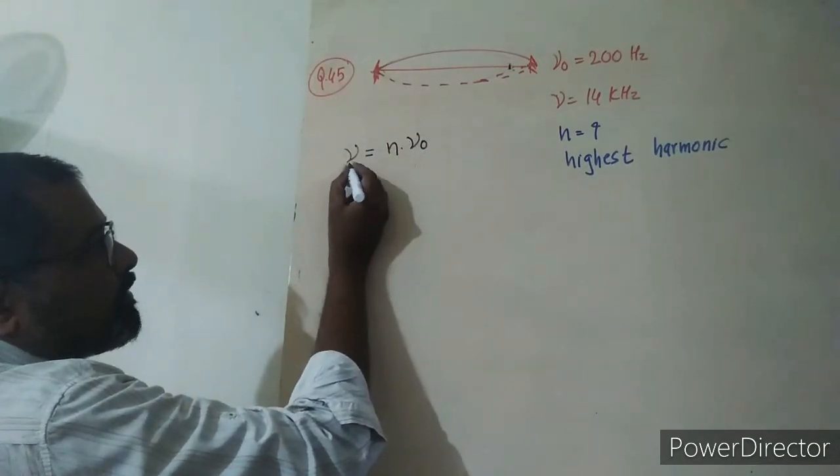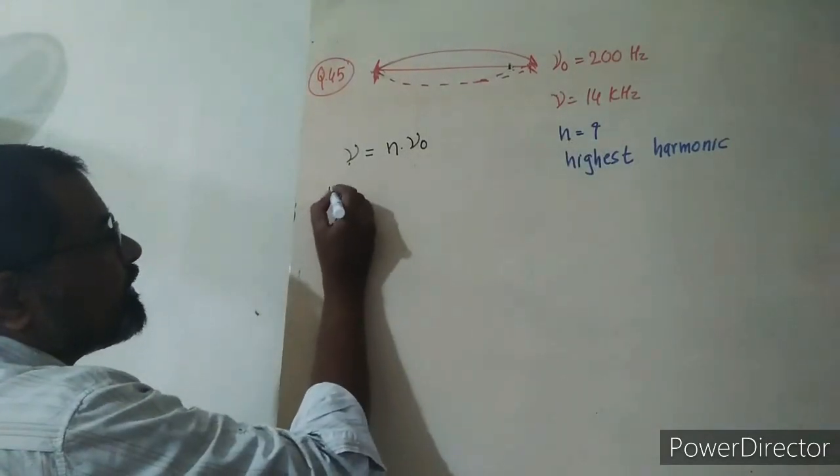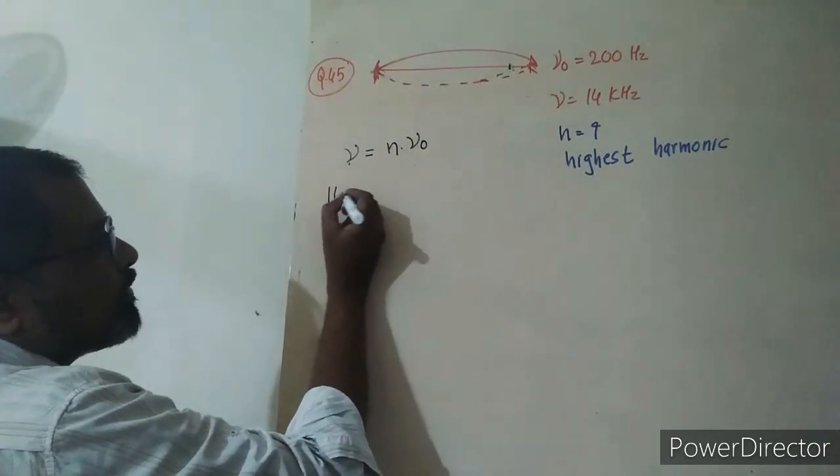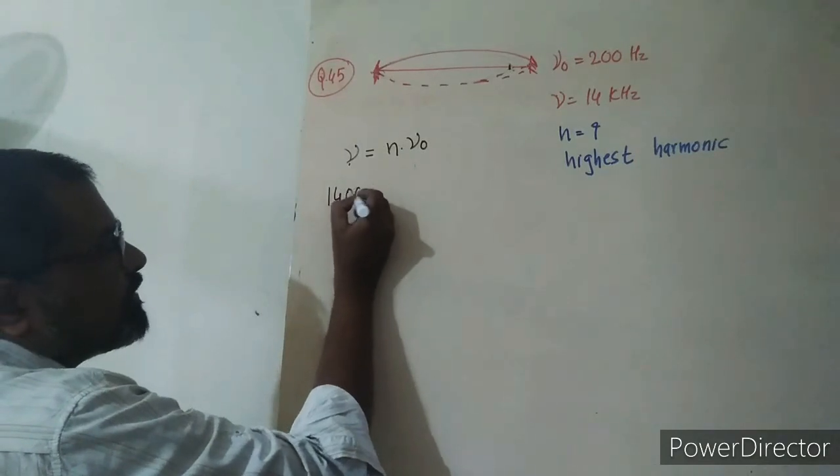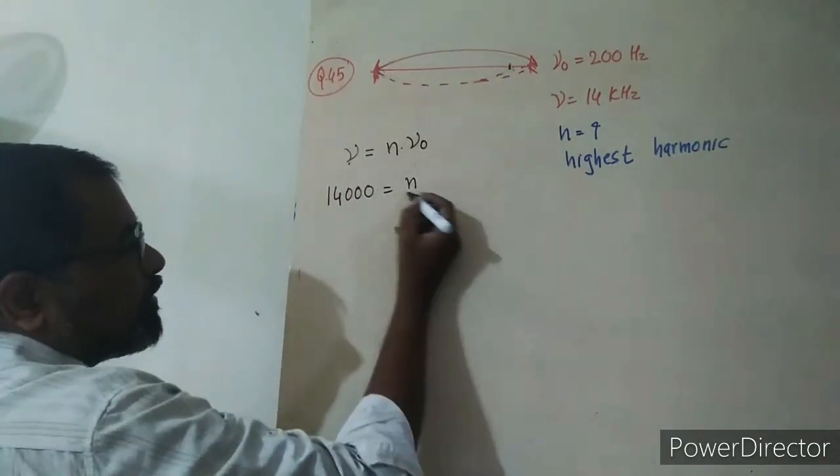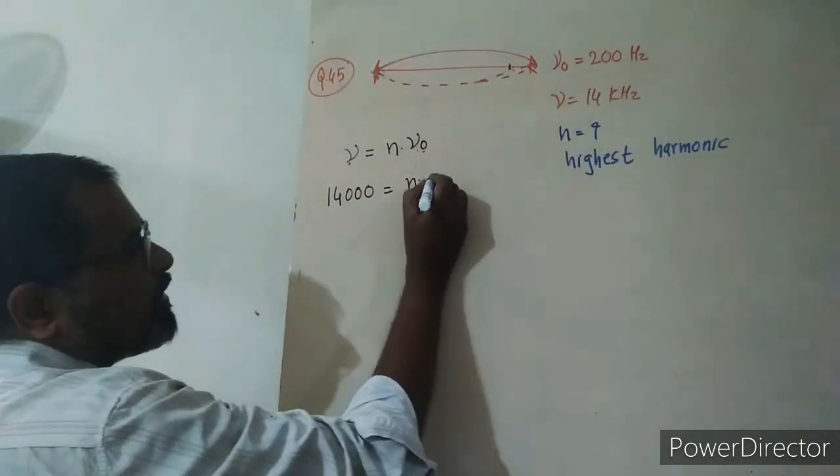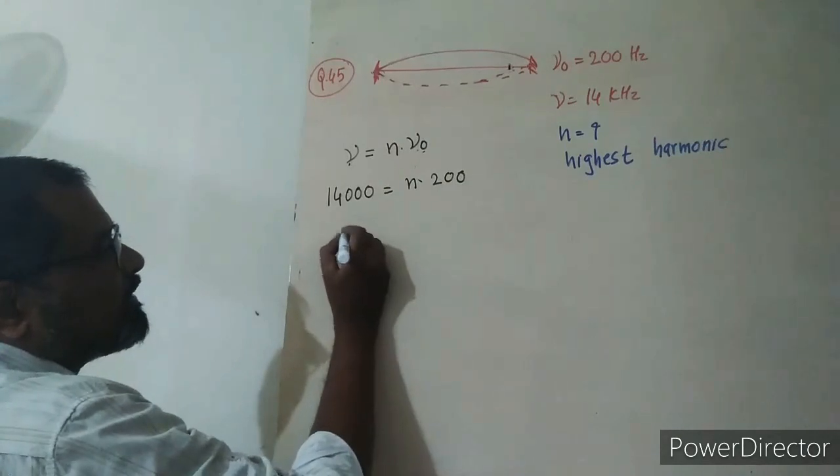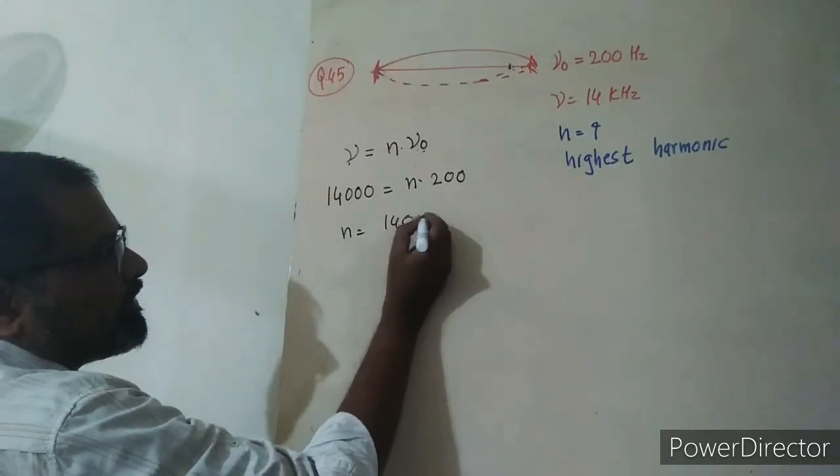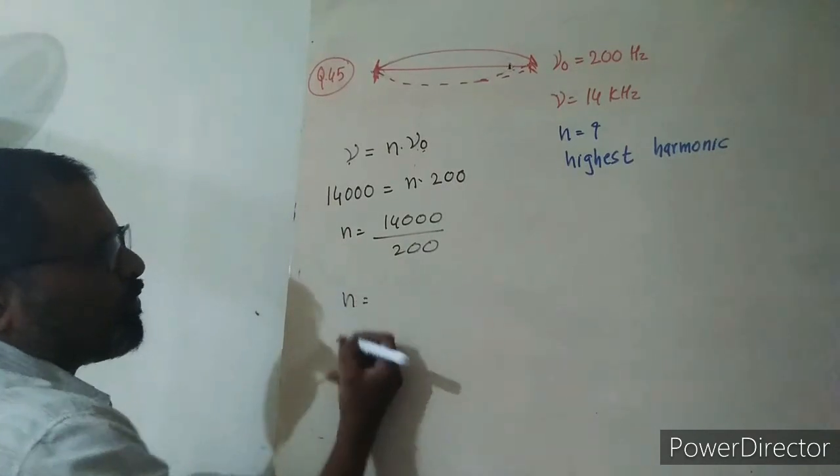The frequency here, we have audible sound. For audible sound, it's 14,000 Hertz, and we need to find harmonic N. The fundamental frequency given is 200, so the value of N will be 14,000 divided by 200.